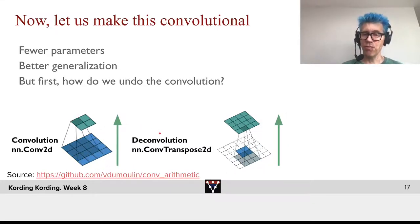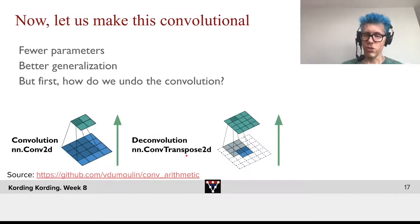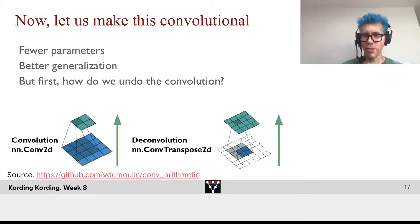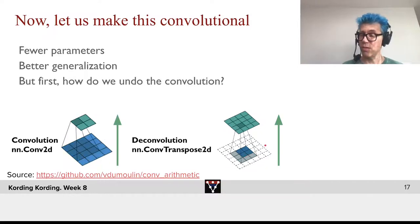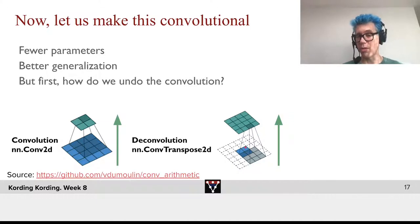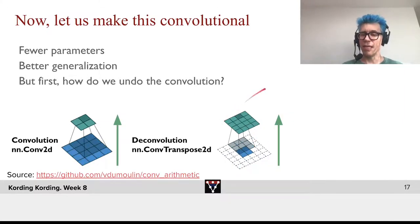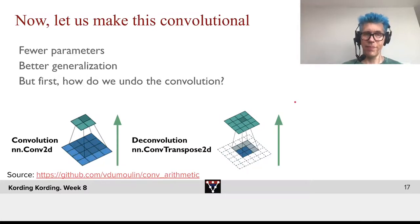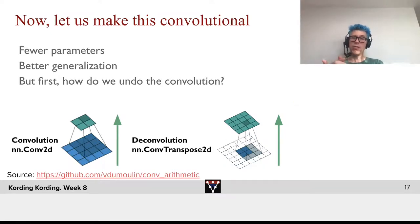Now we need to go in the other direction, and for that, we can use the idea of deconvolution. What we do in the case of deconvolution is we have something move over space here, potentially with stride, that sees these 2x2 outputs — potentially with padding, as you can see here — and then goes back in dimensionality to this higher dimensional space.